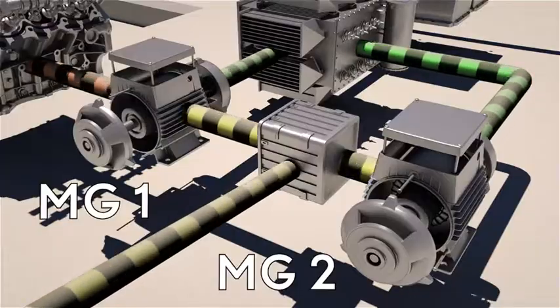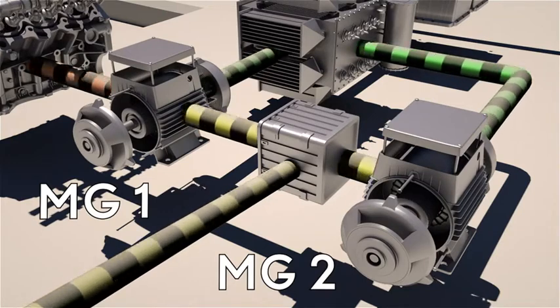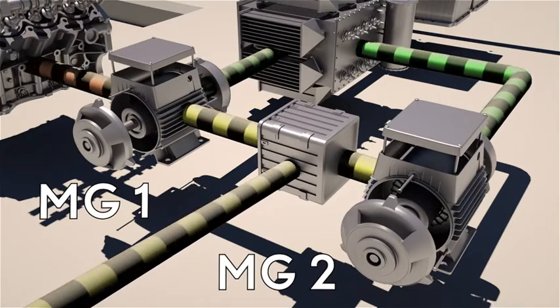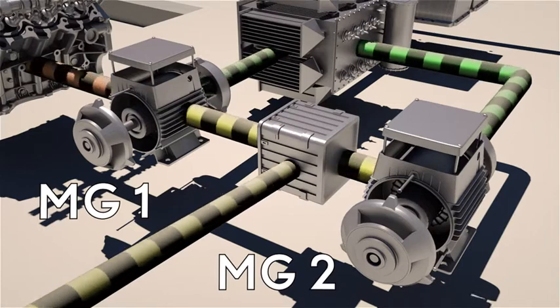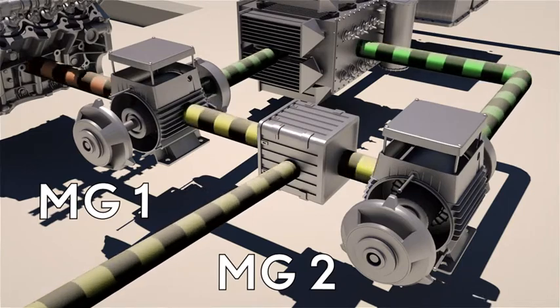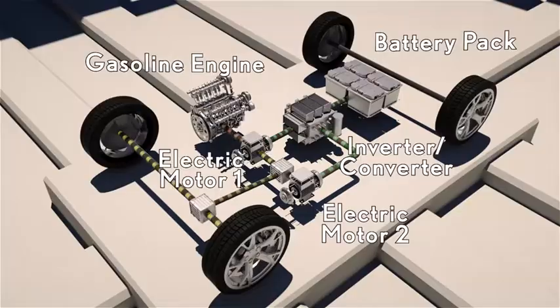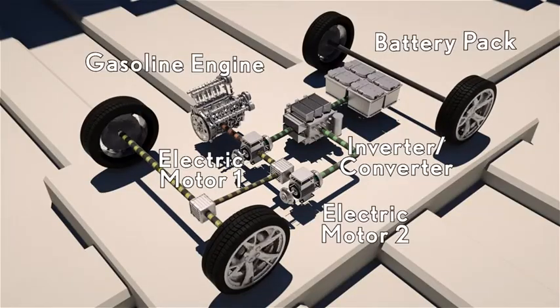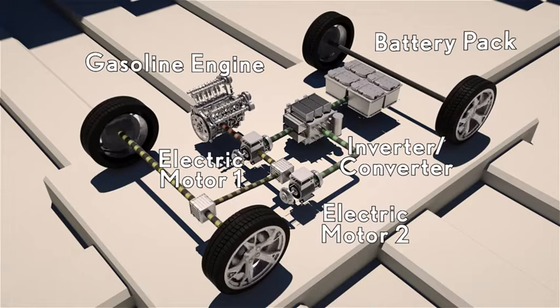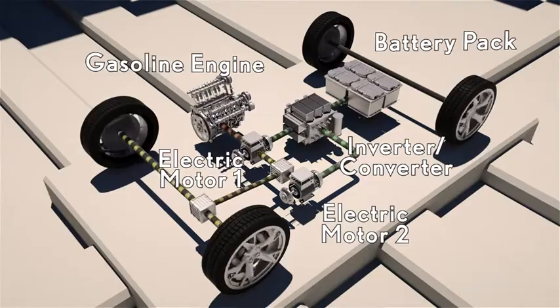The two main electric motors are called MG1 and MG2, which stand for Motor Generator 1 and Motor Generator 2. MG1 is driven by the gas engine and functions as a generator to recharge the hybrid battery pack and send additional electricity to MG2. MG1 also acts as a starter motor for the engine.